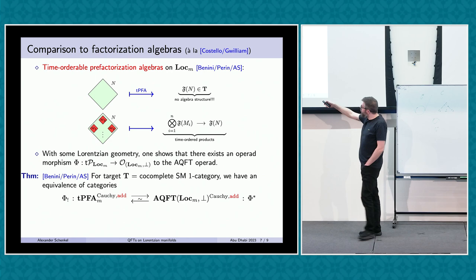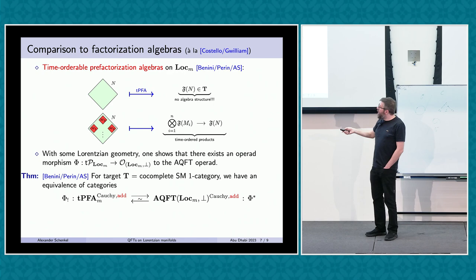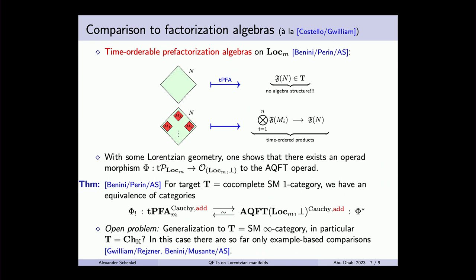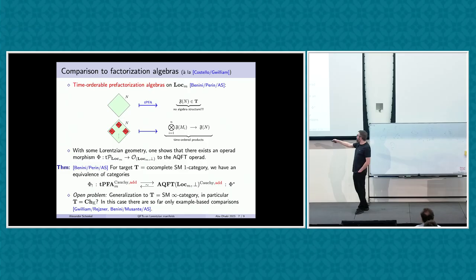This equivalence at the level of chain complexes is supported by example-based comparisons by Reisner and by Benini, Musander, and myself, showing that quantization constructions match in both frameworks. However, the higher-categorical version of this equivalence remains open, partly due to technical limitations in constructing the left adjoint in a higher-categorical context — the key step of inverting maps requires working with contractible spaces of inverses.